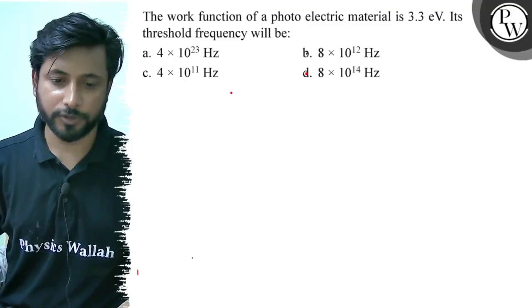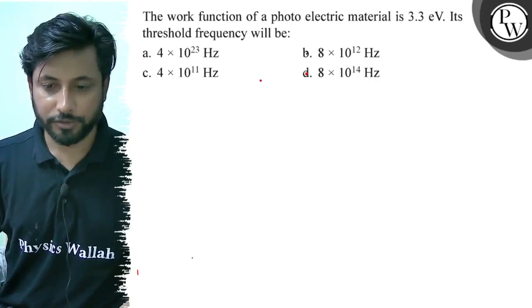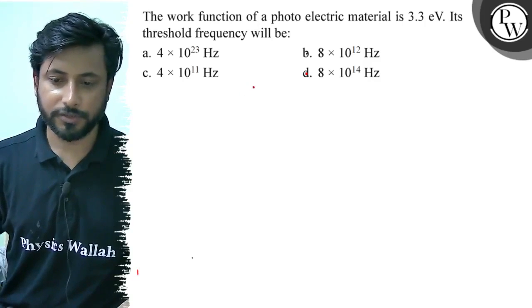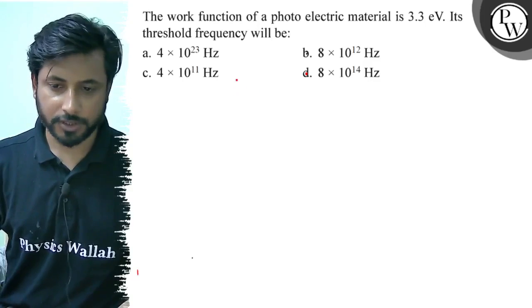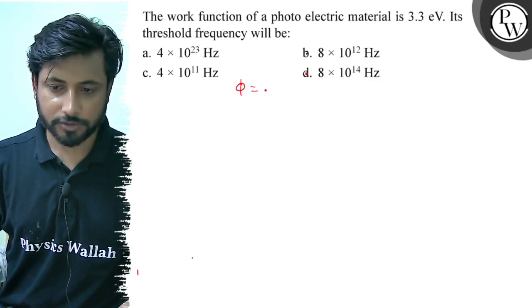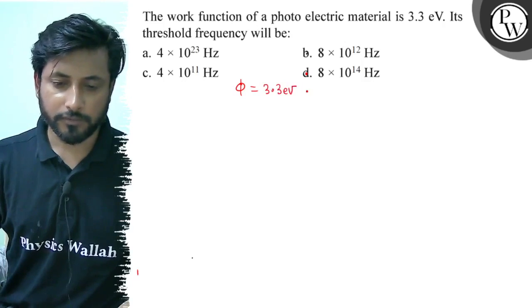Option A: 4 × 10^33 Hz, option B: 8 × 10^12 Hz, option C: 4 × 10^11 Hz, option D: 8 × 10^14 Hz. Work function φ equals 3.3 electron volts.